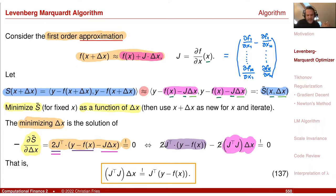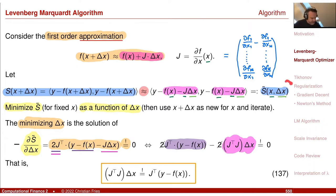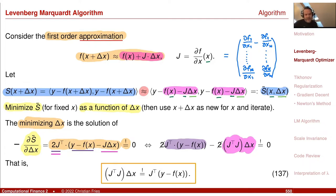Some of you may remember this from the numerical methods lecture — it's the normal equations from linear regression. We just invert J^T J to find the optimal delta x that minimizes our approximation. Then we repeat the step with the new x = x + delta x, recalculating the function and derivative at the new point.